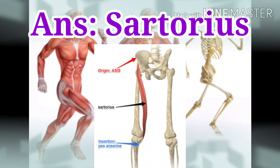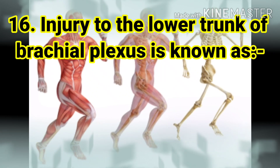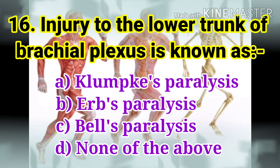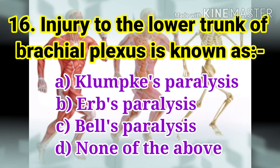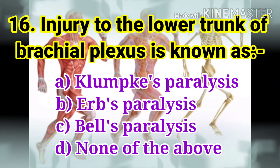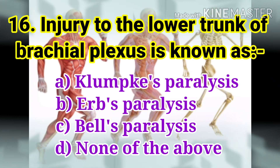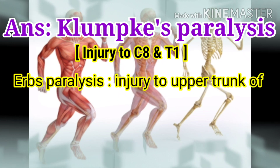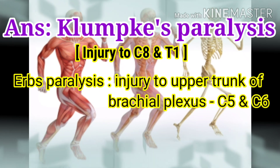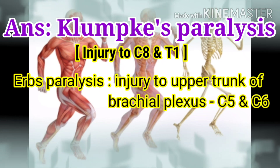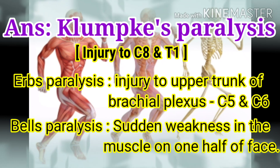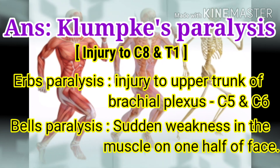The next question: injury to the lower trunk of the brachial plexus is known as. The options are Klumpke's paralysis, Erb's paralysis, Bell's paralysis, and none of the above. The answer is Klumpke's paralysis. Klumpke's paralysis is injury to C8 and T1. Erb's paralysis is injury to the upper trunk of the brachial plexus, that is C5 and C6. Bell's paralysis is sudden weakness in the face muscles on one half of the face.